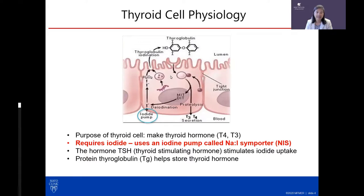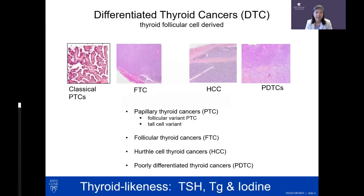T4 has four iodine molecules. Because of this feature, we can use this therapeutically in thyroid cancer. There's an iodide pump that takes up iodine to make thyroid hormone, and a protein called thyroglobulin that helps store the thyroid hormone within the colloid. Thyroglobulin is often used as a marker in thyroid cancer follow-up.